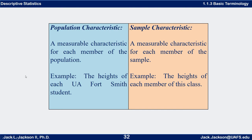A population characteristic is something that we measure for the entire population. For example, we might measure the heights of each and every University of Arkansas Fort Smith student. If we do the same thing for the sample, that is going to be a sample characteristic. So the characteristic is what we're measuring — the population is the actual students, and the population characteristic is their heights.